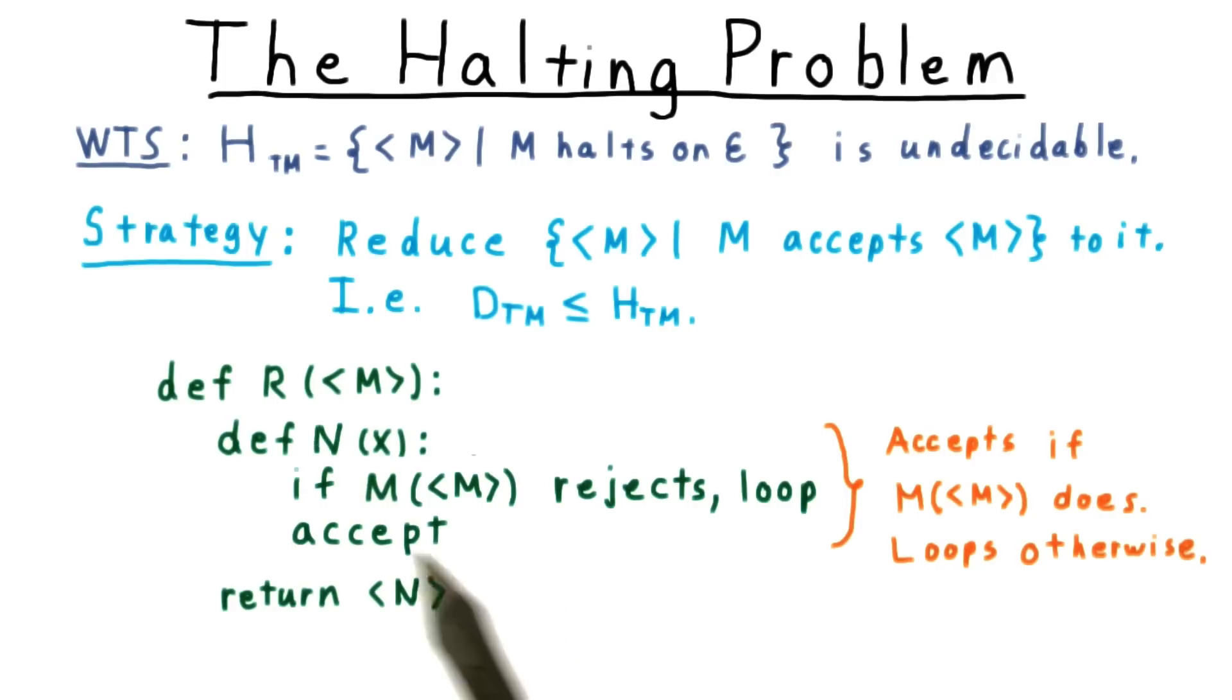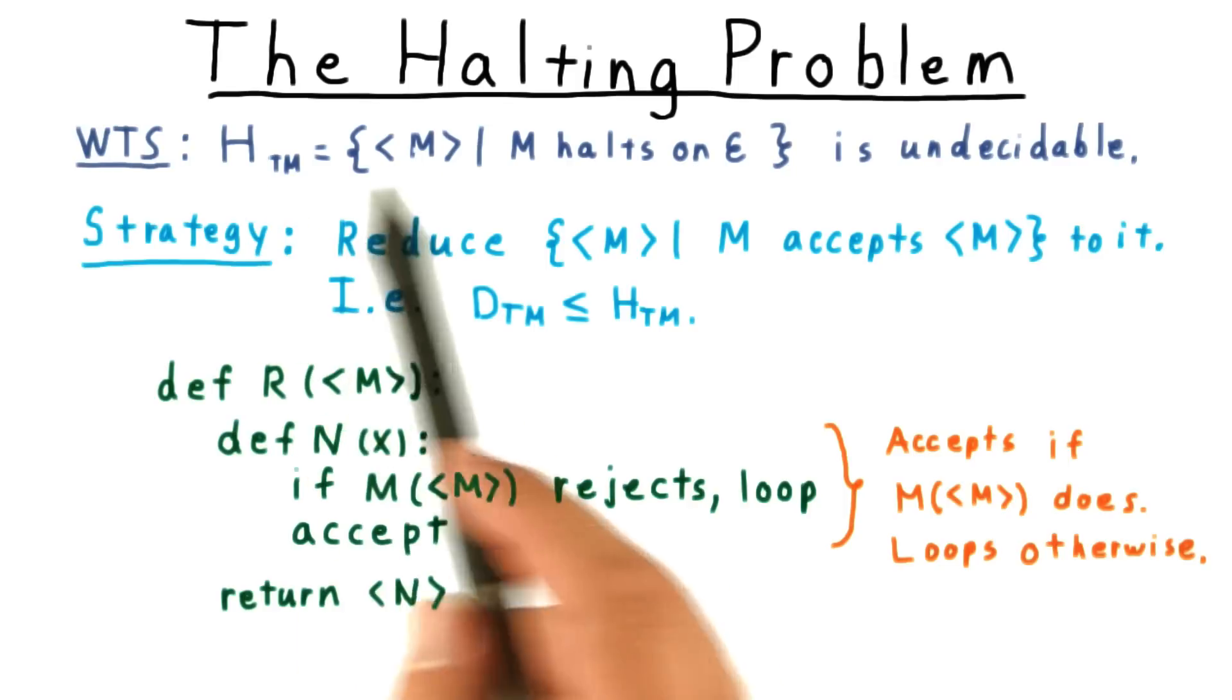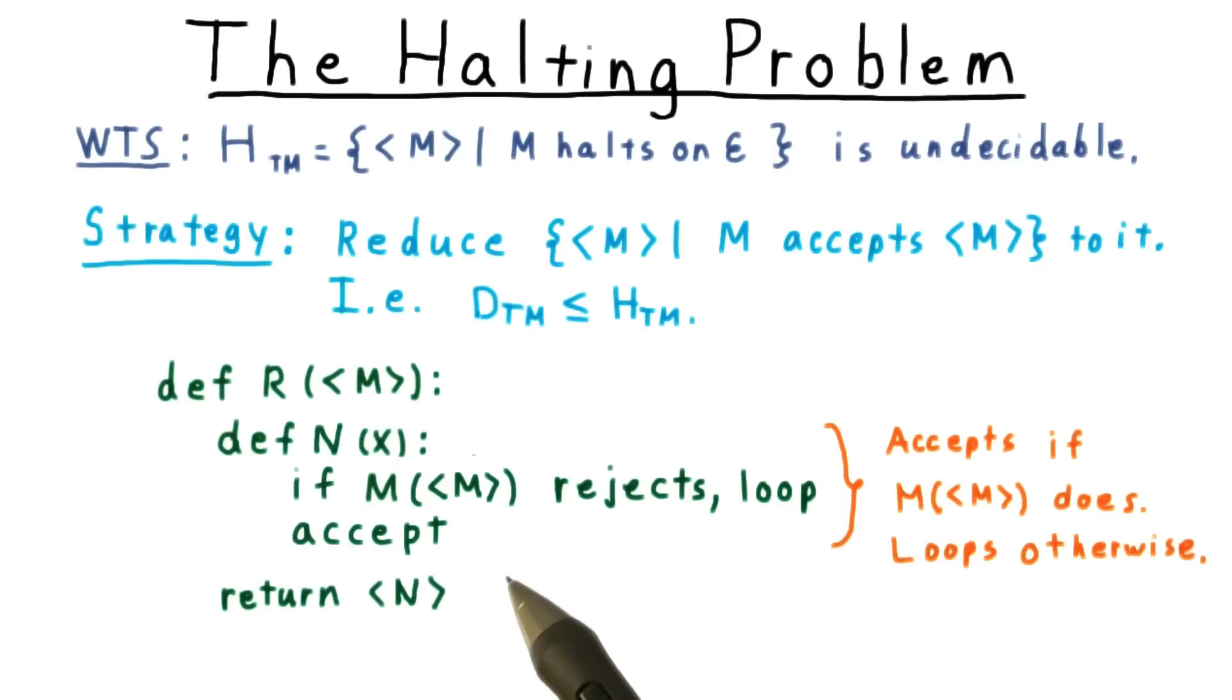On the other hand, if m either rejects or loops on itself, then n will loop. A decider for the halting problem could tell the difference between accepting everything and looping on everything, so the reduction is complete.